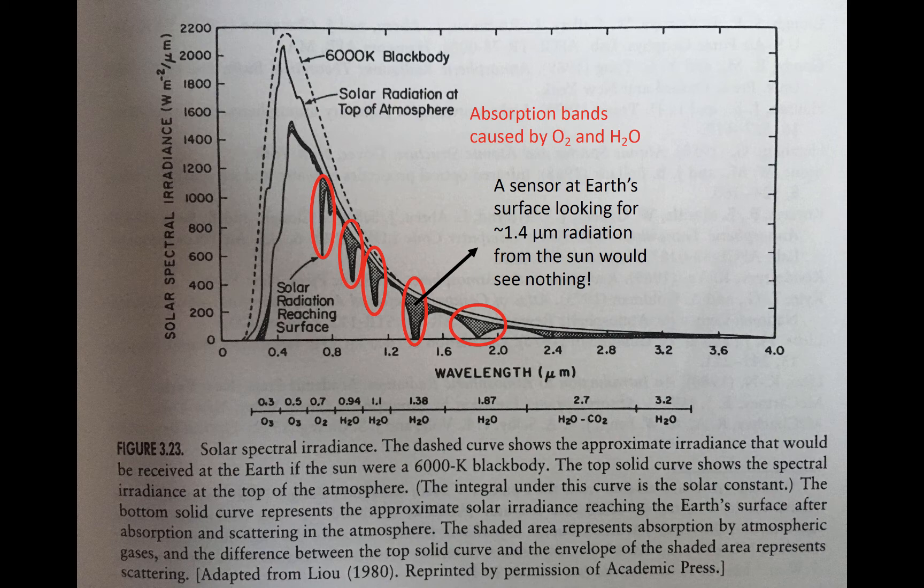The actual solar irradiance at the Earth's surface for an atmosphere with average water vapor content is depicted by the bottom of the shaded region. Molecular oxygen and water vapor absorb near-infrared solar radiation in various bands. Some of the bands are denoted by the red circles. If you look at the different curves around 1.4 microns, you'll see that the top of atmosphere irradiance is about 400 watts per square meter per micron, but the surface irradiance is zero. You wouldn't want to use a 1.4 micron wavelength on a satellite to gather information about reflection from the ground.